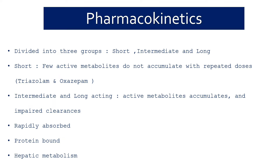You need to understand what type of benzodiazepine the patient consumed — short-, intermediate-, or long-acting. Commonly available agents like alprazolam are intermediate-acting; long-acting agents include diazepam and lorazepam. Key point: active metabolites accumulate with delayed clearance for longer-acting agents. All benzodiazepines are rapidly absorbed, protein-bound, and undergo hepatic metabolism.